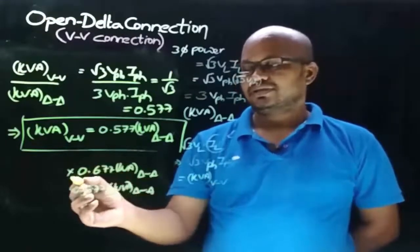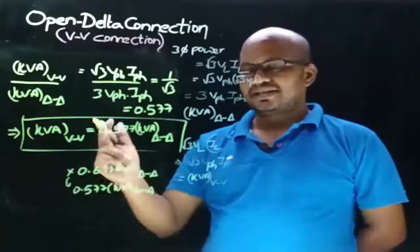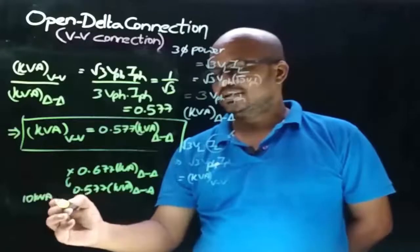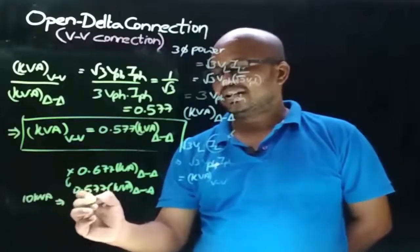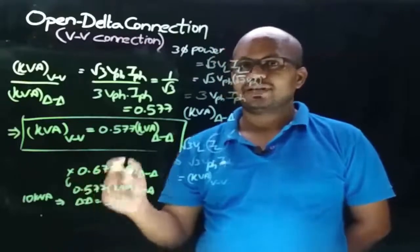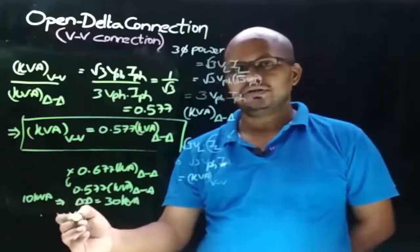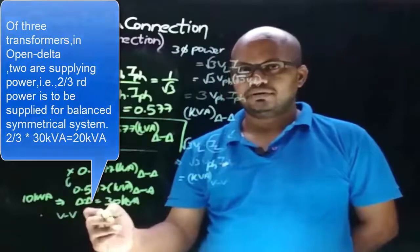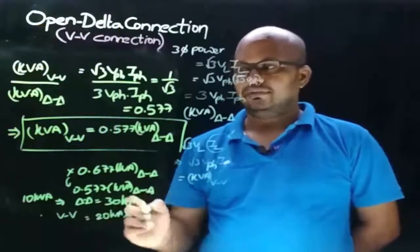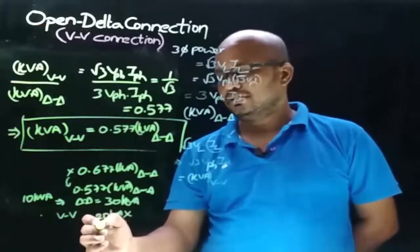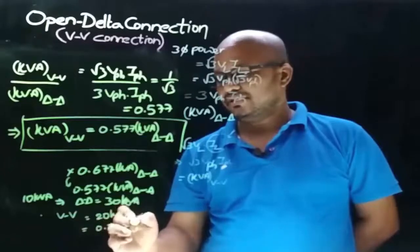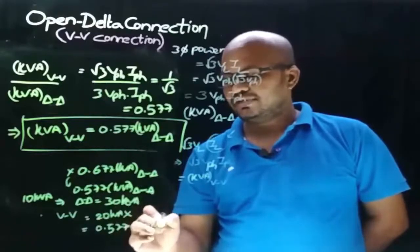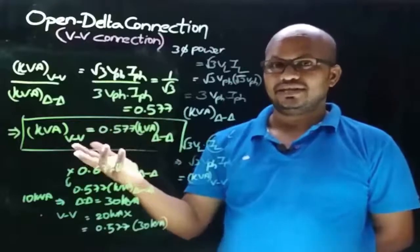Let's understand this with an example. Let the rating of each transformer be 10 KVA, so the power delivered by delta-delta connection is 30 KVA. When one transformer fails, we might think the power delivered by open delta connection is 20 KVA since two transformers are involved, but this is not true. With open delta connection, the power transferred is 0.577 times the delta-delta rating of 30 KVA.